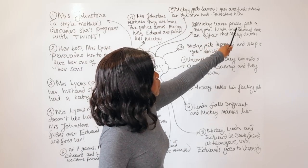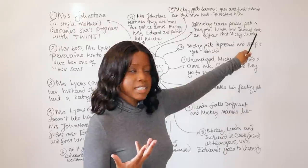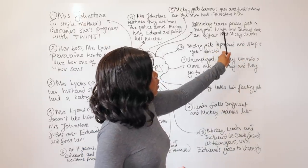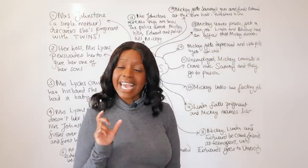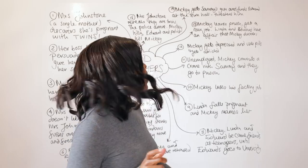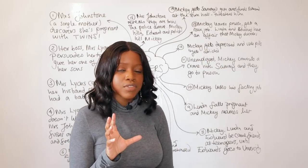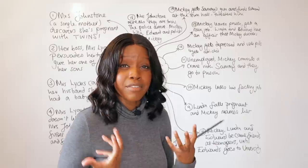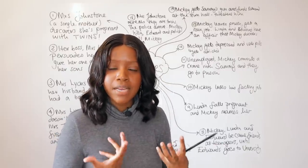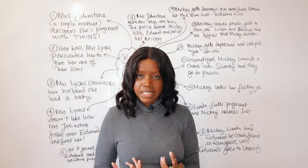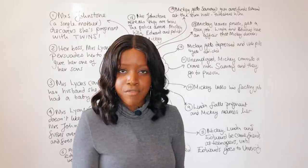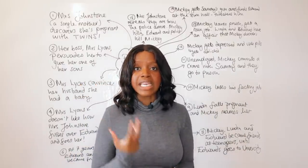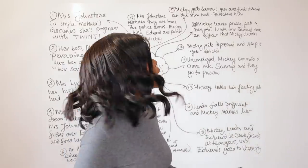Mickey leaves prison, does a stint, and gets a new job. However, Linda and Edward begin a light romance and essentially have an affair. Mickey discovers this and is devastated — Edward, who has everything, is now going to take the only good thing left in Mickey's life, which is Linda, and he cannot accept it.